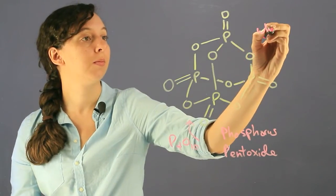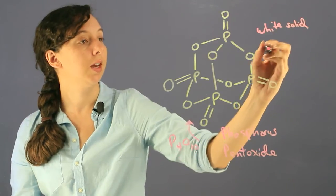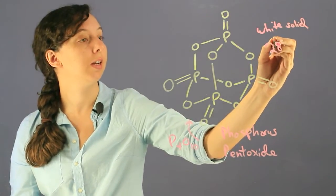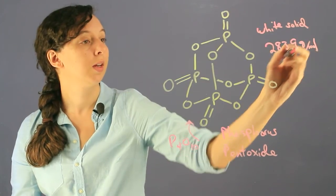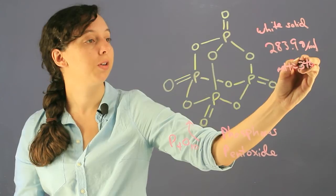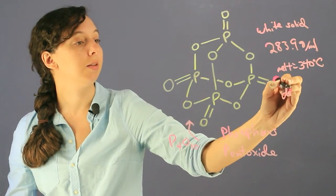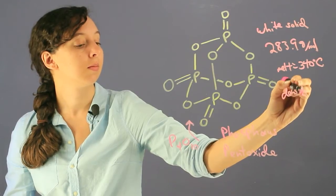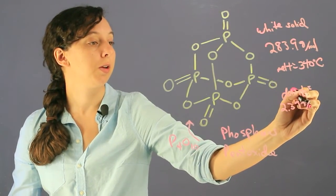It's a white solid. Its molecular mass is 283.9 grams per mole. Its melting temp is 340 degrees Celsius, so it's really stable as a solid. And its density is 2.39 grams per ml, so it's pretty heavy.